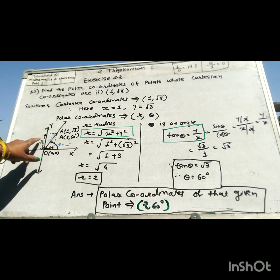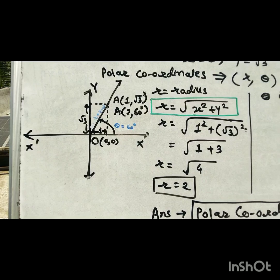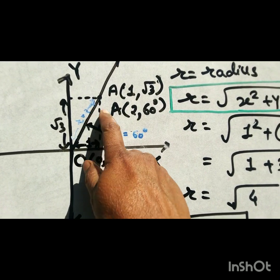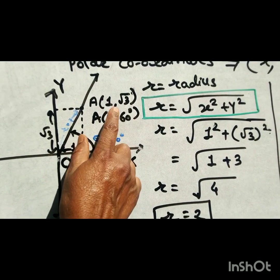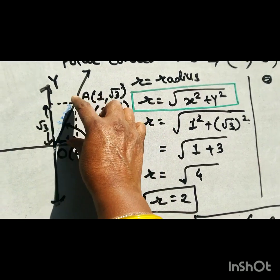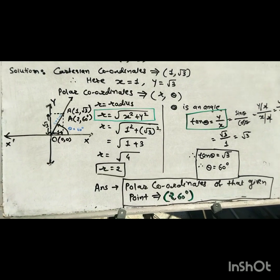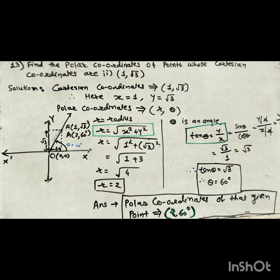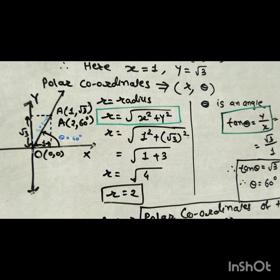If you have graph paper, we can locate the point in the graph. Theta equals 60 degrees and R equals 2. The distance along the x-axis is 1, so the x coordinate is 1, and the distance along the y-axis is root 3, so the y coordinate is root 3.